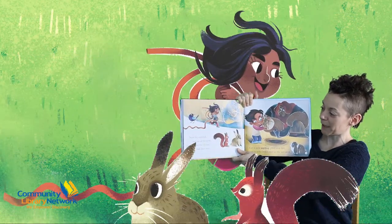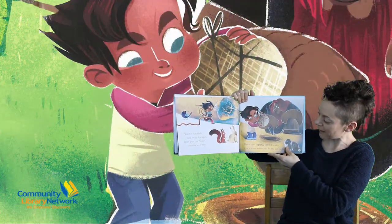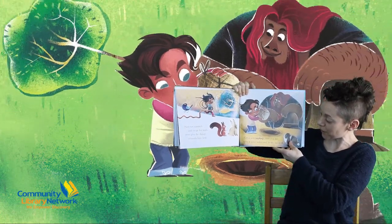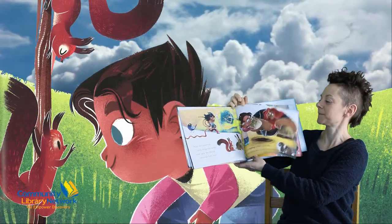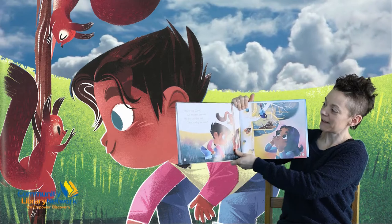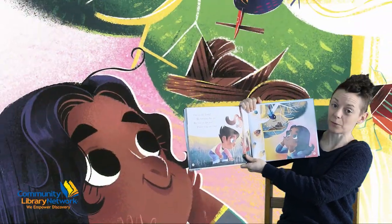Nuts for squirrels and twigs for nests. Trees give the things animals love best. Get a new sapling. Plant it in dirt. Give it some water and let the sun work. This is our Earth. We breathe this air. We live on this soil. That's why we care.